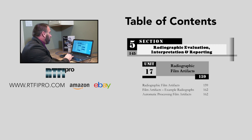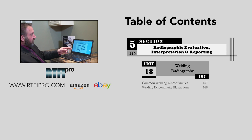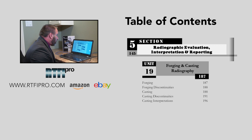Unit seventeen covers radiographic film artifacts: radiographic film artifacts, film artifact example radiographs, and automatic processing film artifacts. Unit eighteen covers welding radiography and common welding discontinuities, including welding discontinuities illustrations. This is very important for your interpretation work — we address each welding discontinuity individually and provide radiographs and illustrations of the different discontinuities.